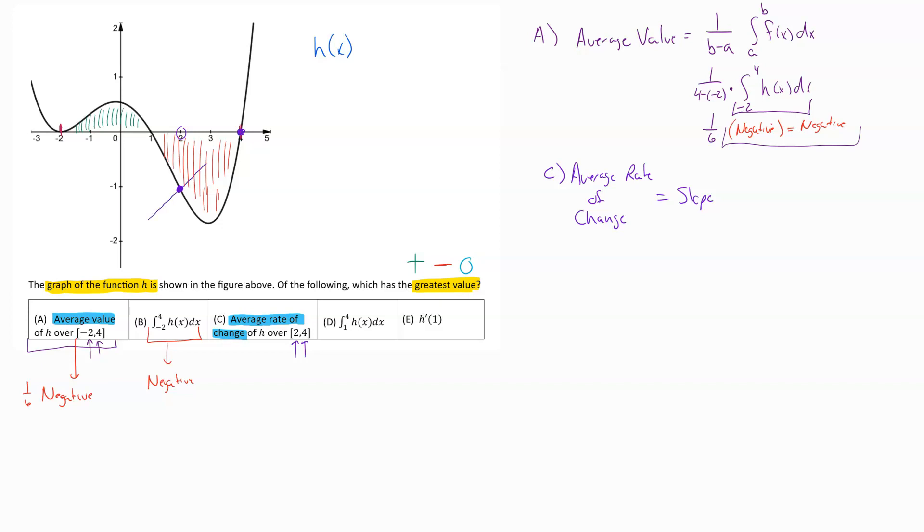And so if we draw a line between the two of those things, the average rate of change on that is the slope of that line. And again, we can't figure it out directly, we might be able to get an estimate. But for right now, let's just kind of go with the idea of whether that's positive or negative. Well, this is an increasing slope. The slope is headed up. And so we know that what we're looking at right now is a positive number. And so at this point, option C has jumped to the front. We know that a positive is always going to be larger than negatives. So we can really just throw away A and B at this point.